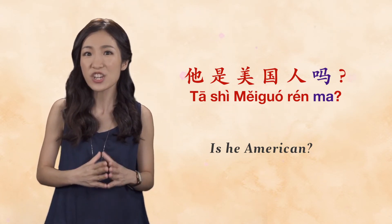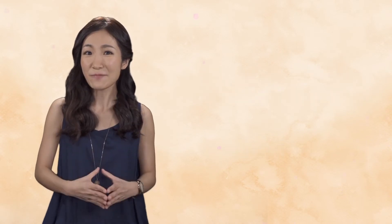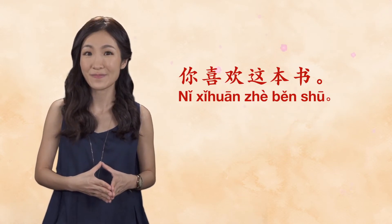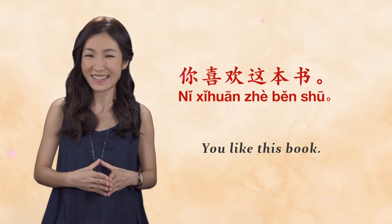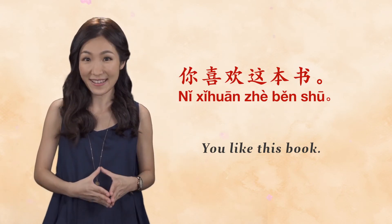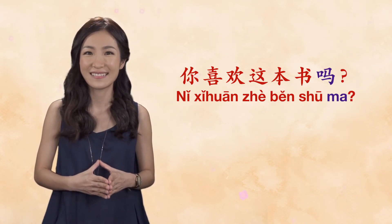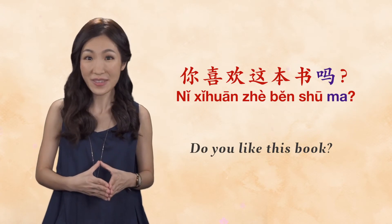No word order or intonation changes needed. Let's practice turning the following sentences into yes/no questions. Remember, there's no need to change word order — just add 'ma' to the end. Number one: 你喜欢这本书 — 'you like this book.' The answer is 你喜欢这本书吗? — 'Do you like this book?'